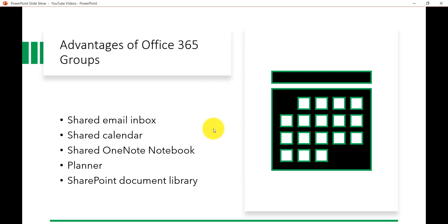You will also get a shared OneNote book to gather ideas or research information. You will get a Planner for assigning and managing project tasks among your group members. Most importantly, you are going to get a SharePoint document library to store and share documents or files. It will also provide a SharePoint team site where you can store content related to the group.